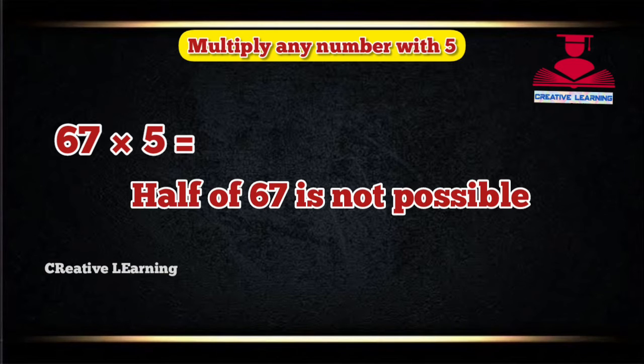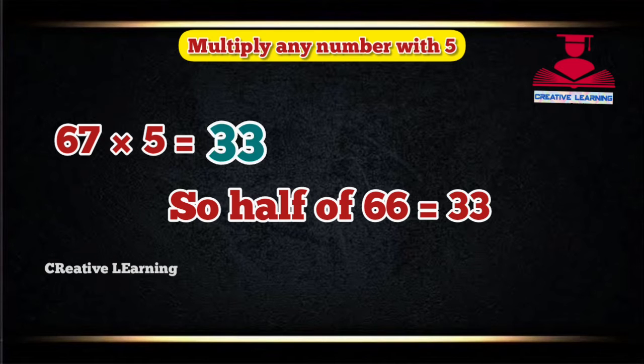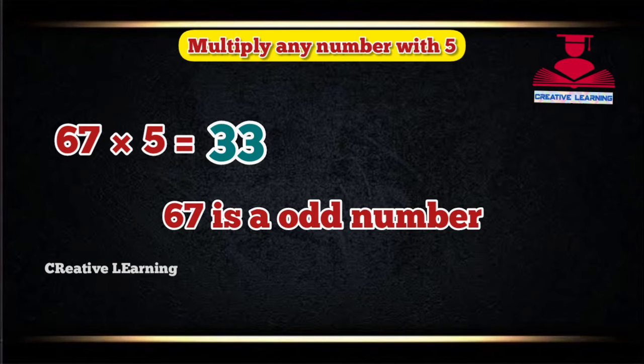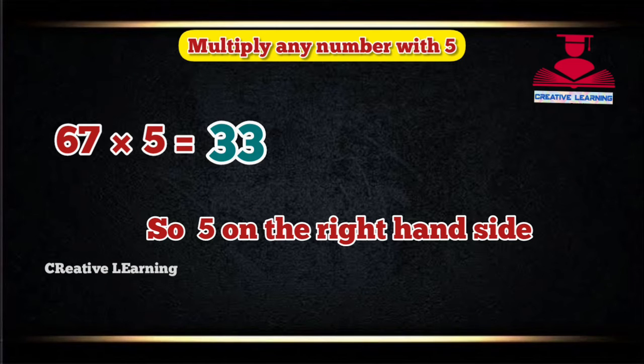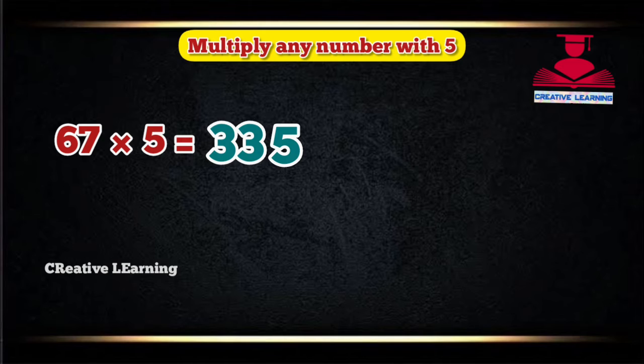Half of 67 is not possible, so half of 66 is 33. 67 is an odd number, so 5 on the right-hand side. Our answer is 335.